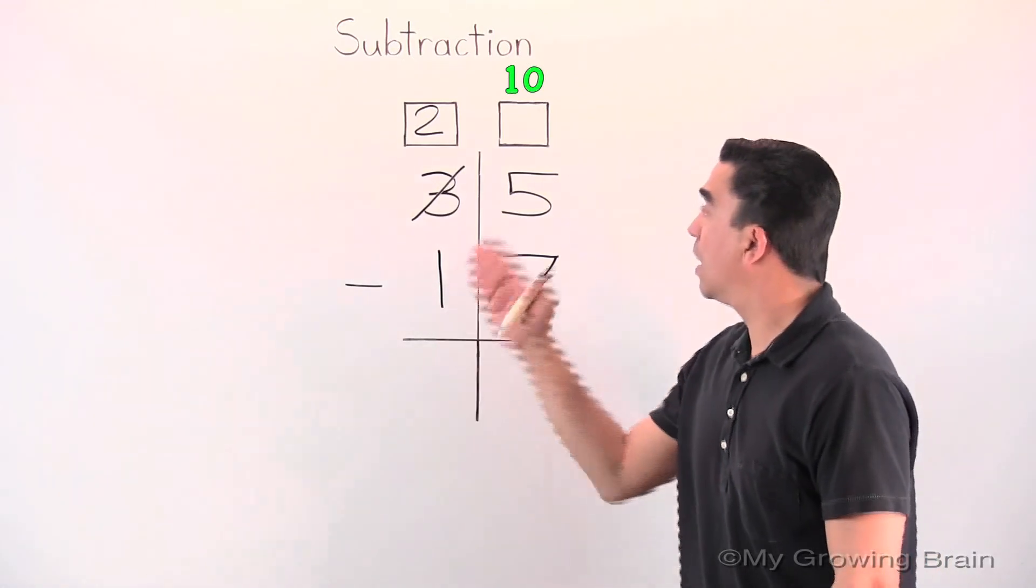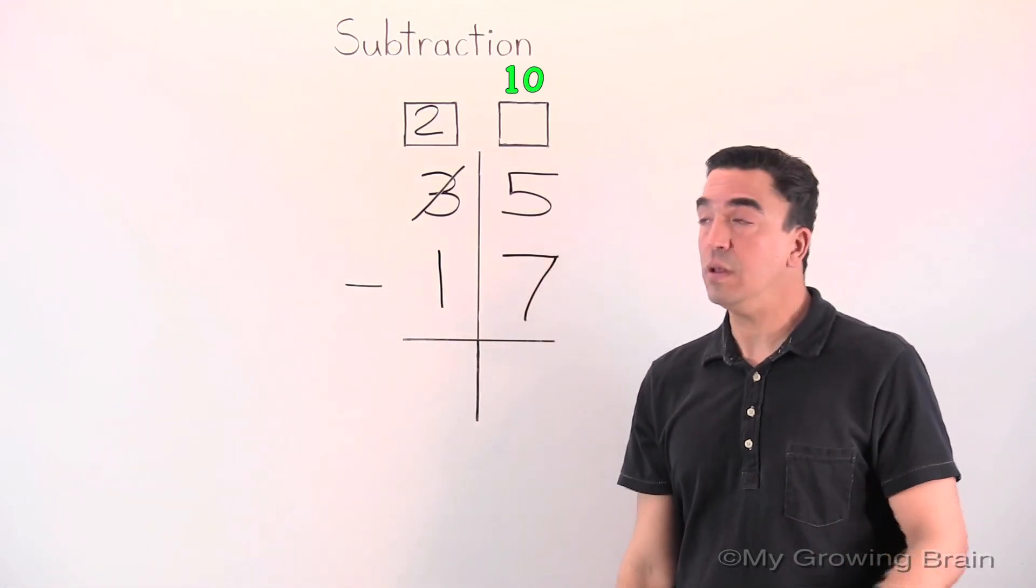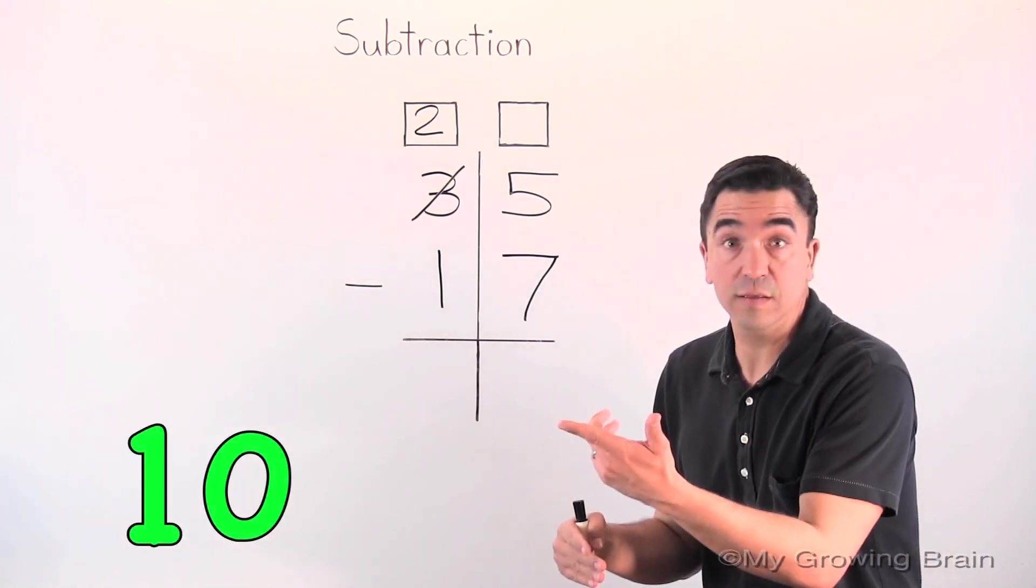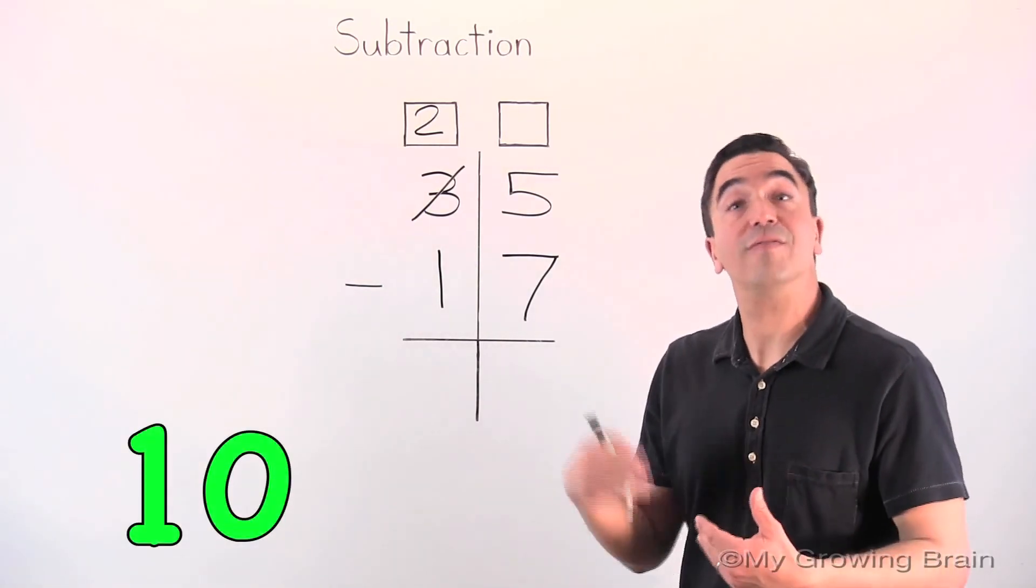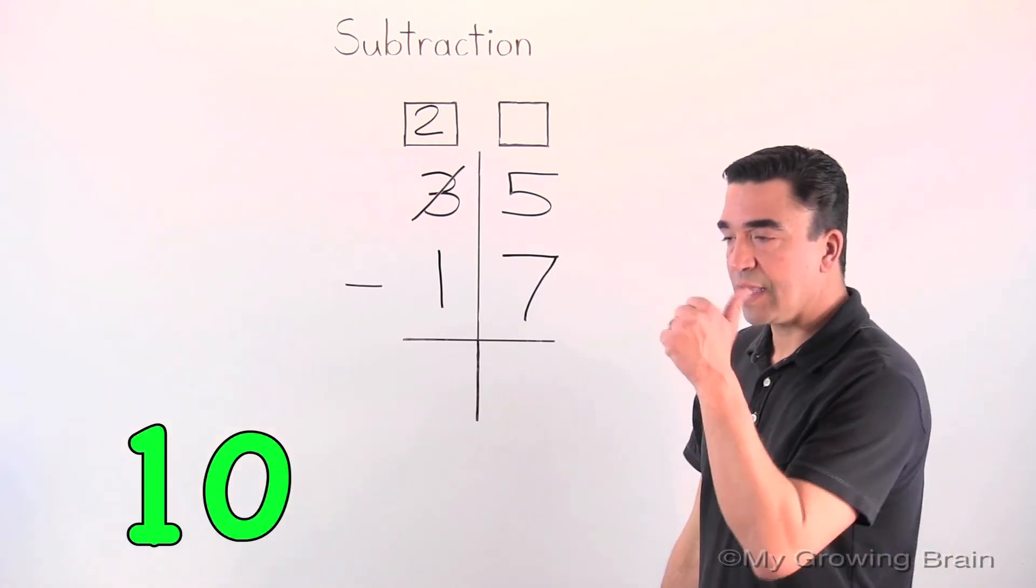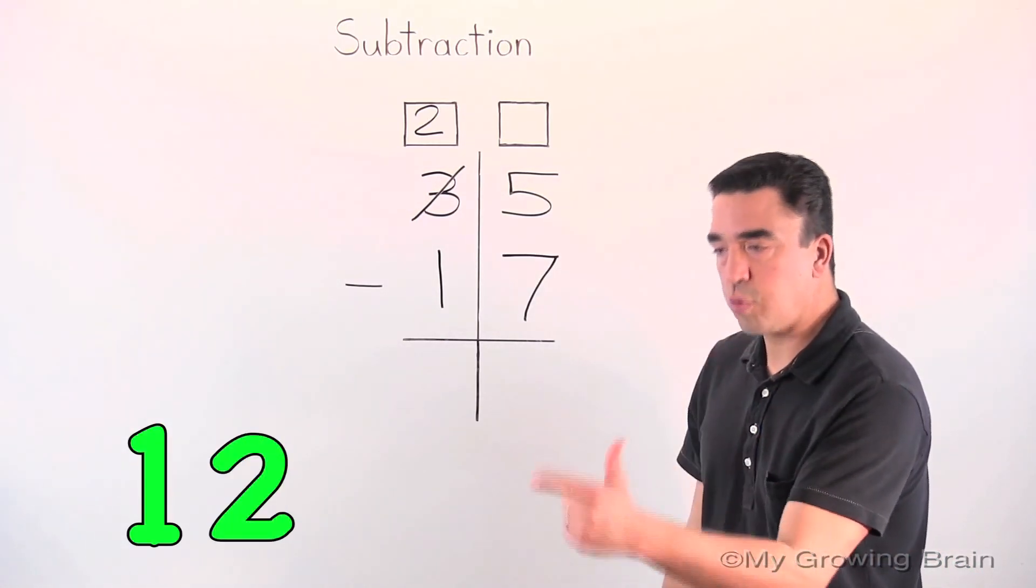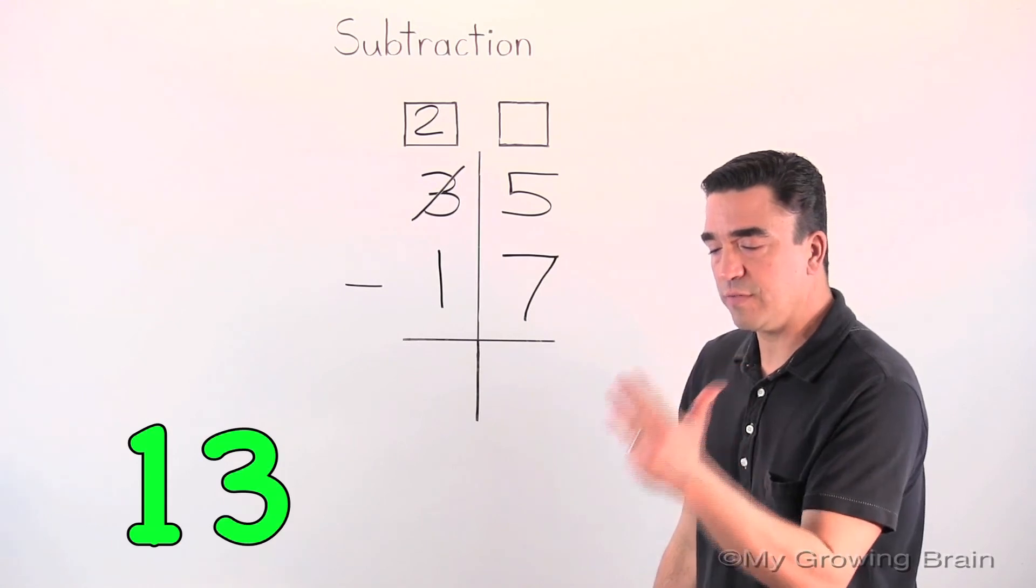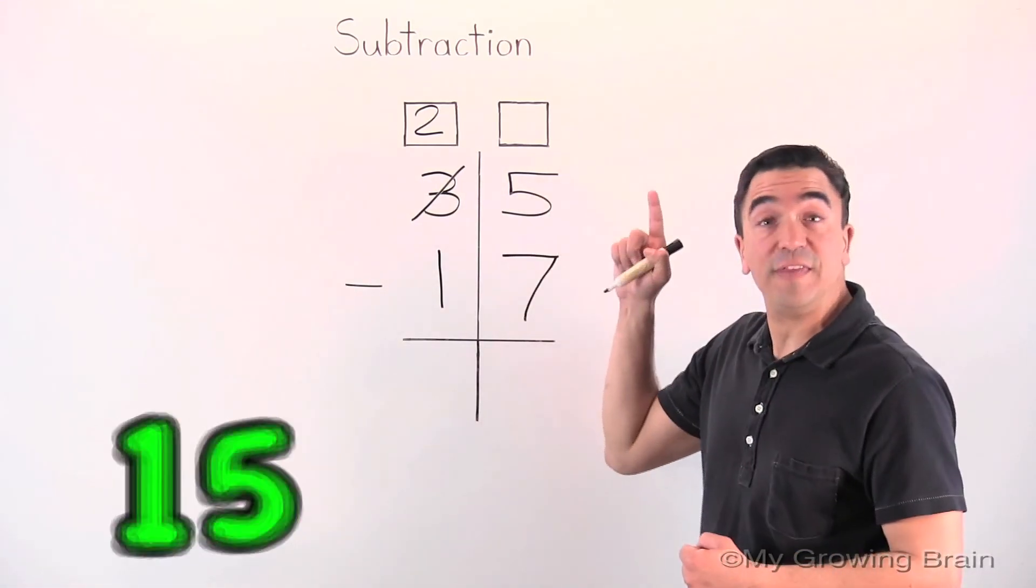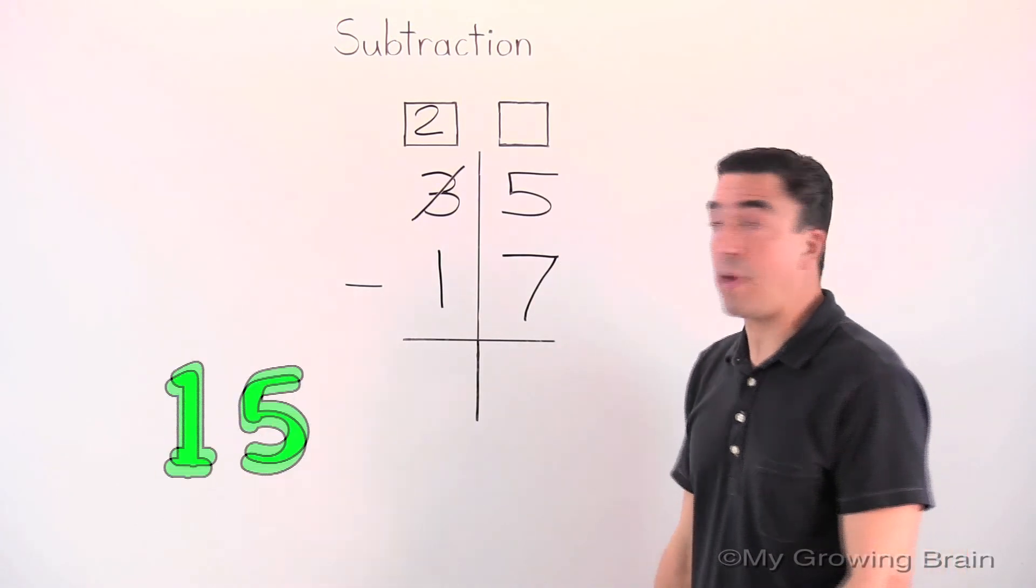Ten plus five. Let's put the ten in our head. We're going to count on. There's our ten. Ten, eleven, twelve, thirteen, fourteen, fifteen. Fifteen. So I'll put fifteen in our regrouping box.